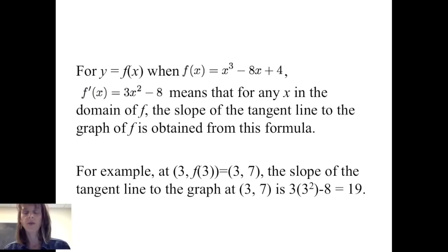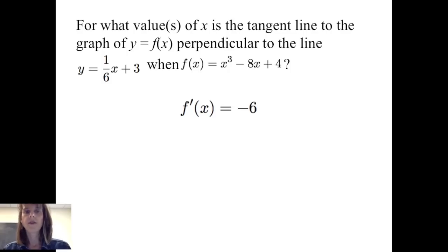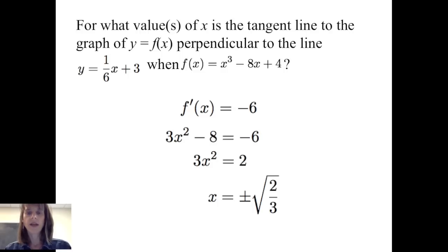This formula gives the slope of the tangent line at any x in the domain. For example, at the point (3, f(3)) which is (3, 7), the slope is 3 times 3 squared minus 8, which equals 19. Going back to the original question: I want to know when f prime of x equals negative 6. Setting 3x squared minus 8 equal to negative 6 and solving gives x equals positive or negative square root of two-thirds.